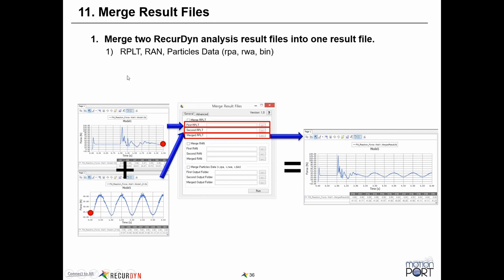A new capability makes it useful to run simulations in pieces. Using the initial conditions file, you can run a simulation to a certain point and restart later to keep going. Previously this produced two separate sets of outputs, animations, and so on. Now there's built-in UI capability to merge results files together: RPLT files can be merged for plotting, RIN files (RecurDyn animation data) can be merged, and even particle data from co-simulation can all be merged together into one single combined run for both animation and plotting.